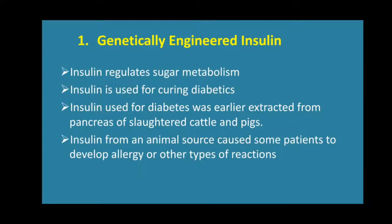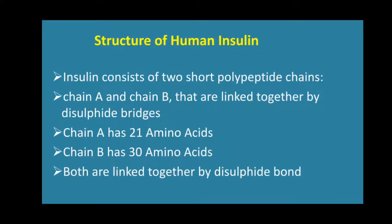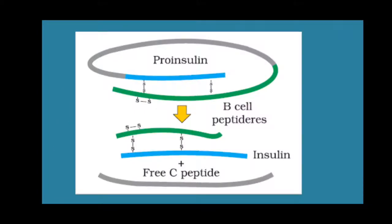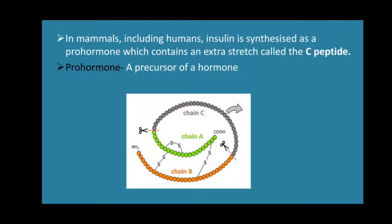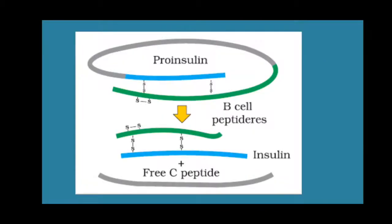Now, regarding the structure of human insulin: there are two polypeptide chains — chain A and chain B. There is also the pro-insulin structure, which is the pro-hormone or precursor form. After maturation, the pro-insulin matures into the mature insulin form.